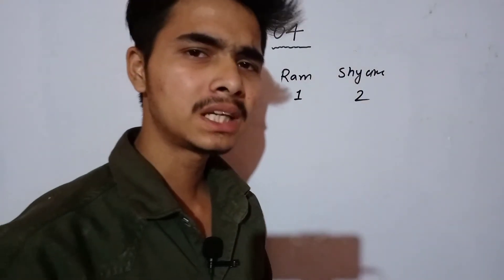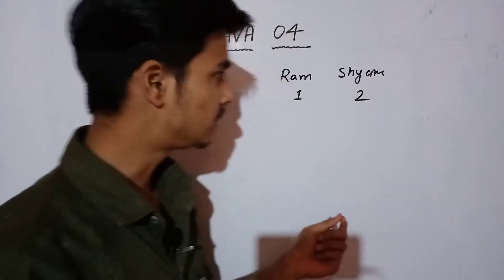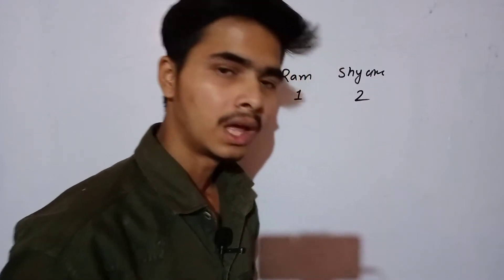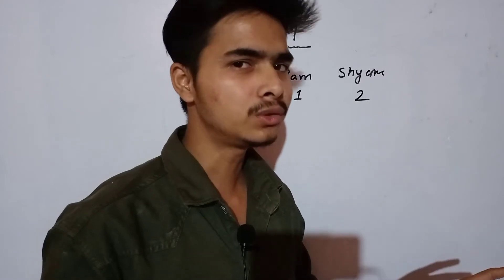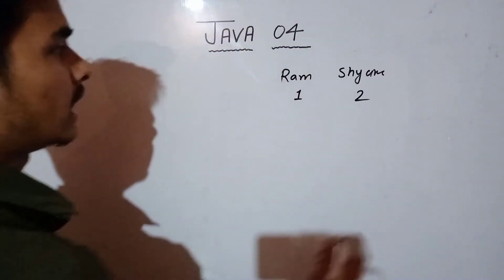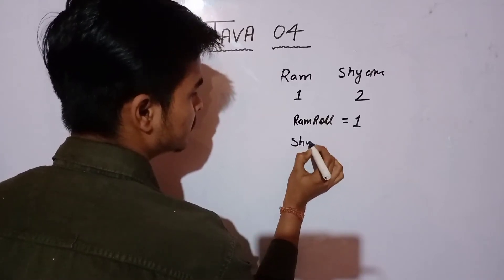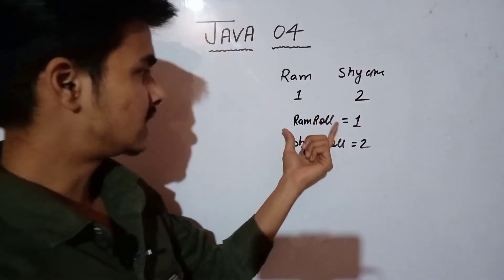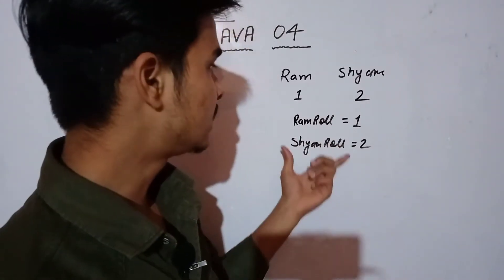I have taken a simple example. Suppose there are two students, namely Ram and Shyam. Their roll numbers are respectively 1 and 2 — the roll number of Ram is 1 and the roll number of Shyam is 2. Now a requirement arises that I need to store their roll numbers somewhere in my program. A basic student would write: Ram roll number equals 1 and Shyam roll number equals 2. This is the simple way that we can store their roll numbers.